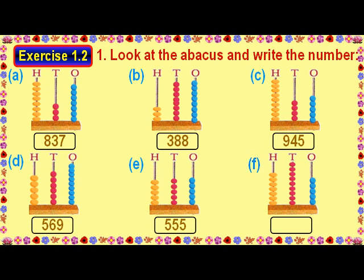Answer F: 7 beads in the 100s place stand for 700, 9 beads in the 10s place stand for 90, and 5 beads in the 1s place stand for 5. So the required number is seven hundred and ninety-five.